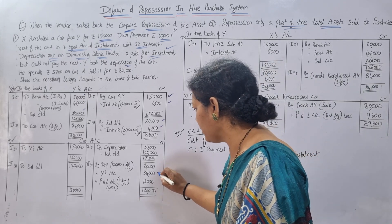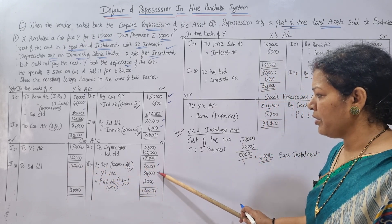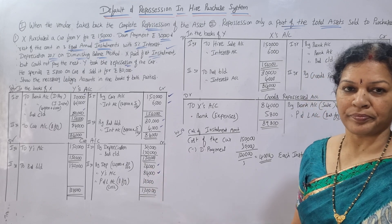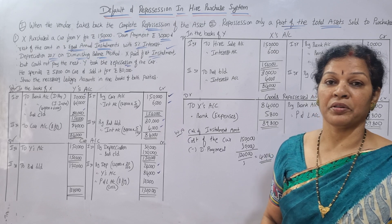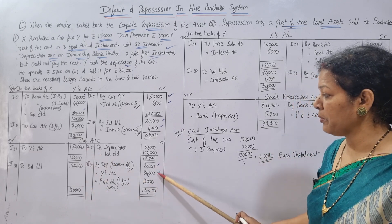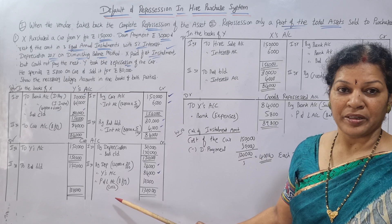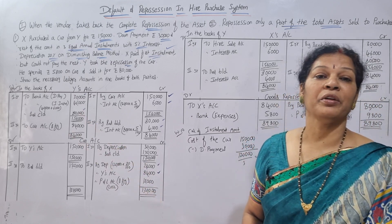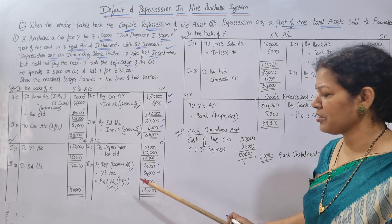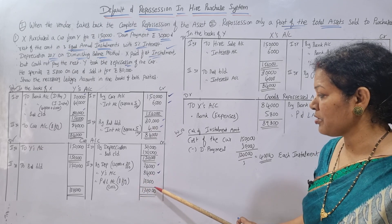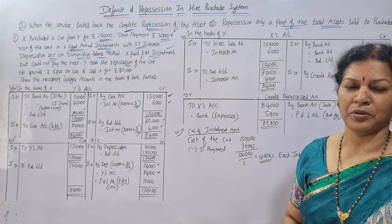After all entries, the credit side of the car account totals 24,000 depreciation plus 84,000 transferred from Y's account. The balancing figure comes to 12,000. Since this appears on the debit side, it is a loss — transferred to profit and loss account. The cost was higher but the asset was taken back, meaning it's a loss of 12,000. So in the books of X, we prepared Y's account and the car account — just two accounts.